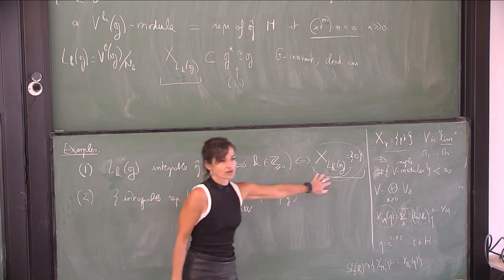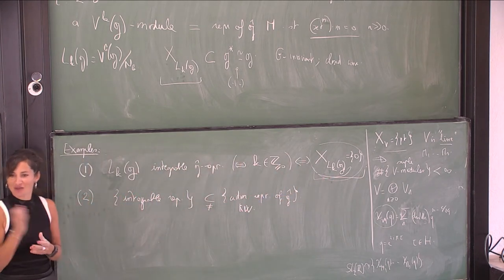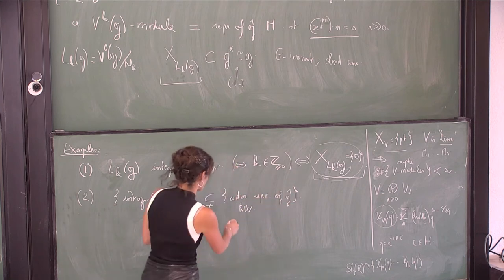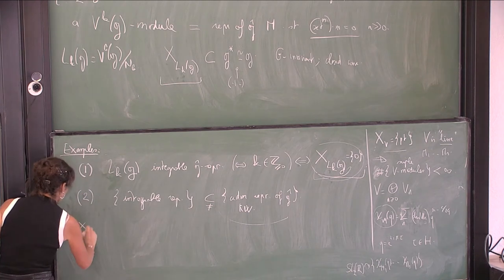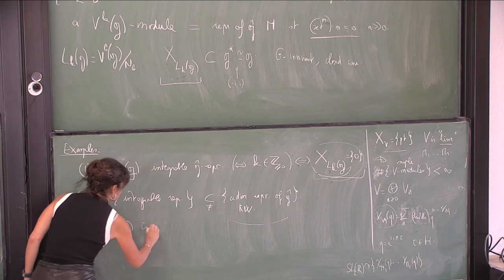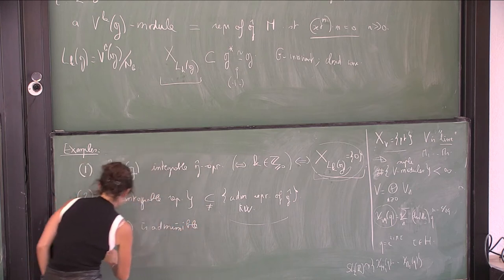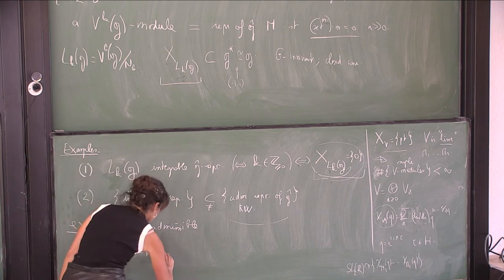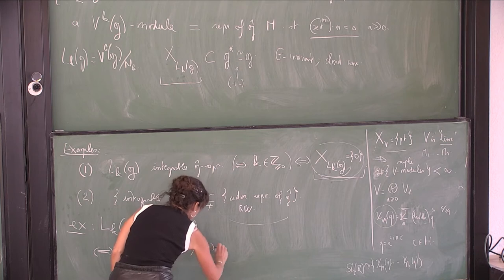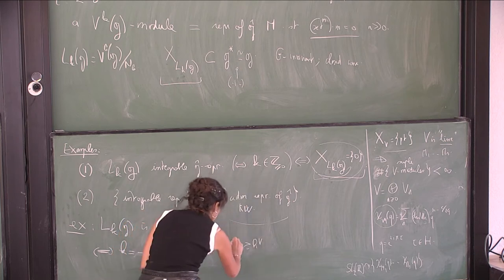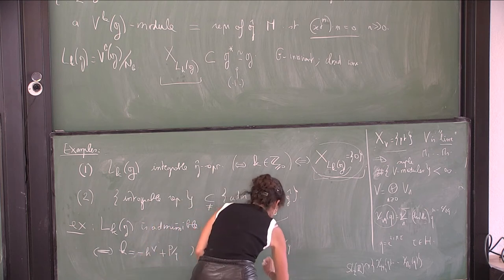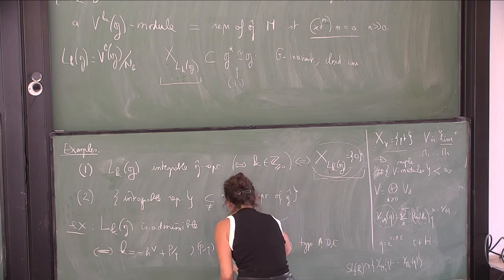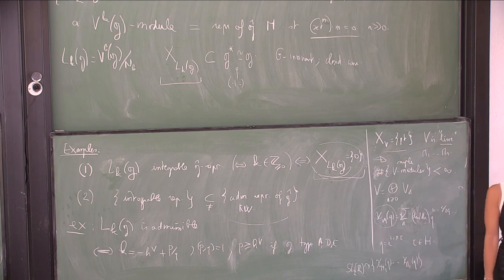There is a larger class. The simple quotient L_k(G) is admissible in the sense of Kac if and only if k is a rational number of the form −h^∨ + p/q, where p and q are coprime and p is greater than the dual Coxeter number h^∨ (at least when q is 1, and for g of type ADE). If k is a non-negative integer it is admissible as a special case.